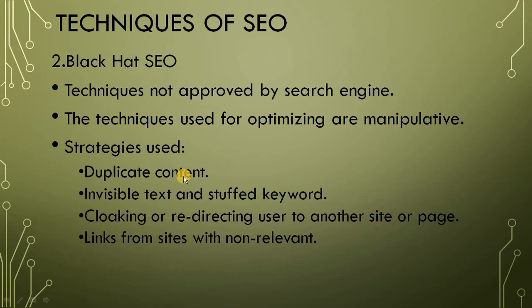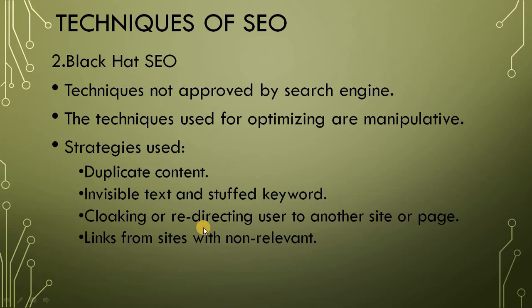The strategies used in Black Hat SEO are: duplicate content — the same text is repeated again and again; invisible text and keyword stuffing — keywords are placed everywhere throughout the page; cloaking or redirecting the user to another website — they portray one site in search results, but when you open the website, you are directed to an entirely different page with no relevance; and links from non-relevant sites — links that are not at all related to the content. This strategy is not at all approved and should not be used.